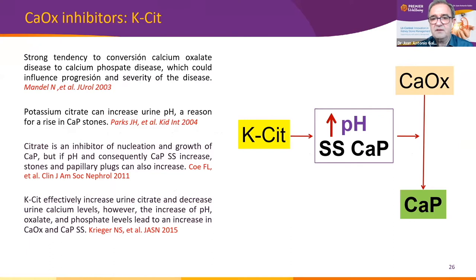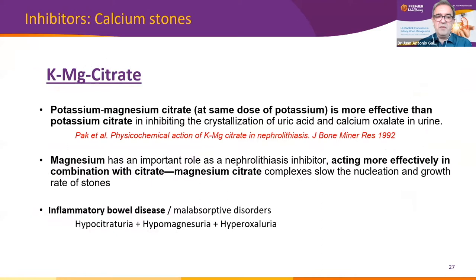There are several evidences showing that calcium oxalate stone treatment with potassium citrate can lead to the formation of calcium phosphate stones, increasing the risk of calcium phosphate stones. A more effective combination in inhibiting uric acid and calcium oxalate crystallization was reported by Pak back in 1992: potassium magnesium citrate. It also slows nucleation and growth rate of stones and is used in bowel diseases.